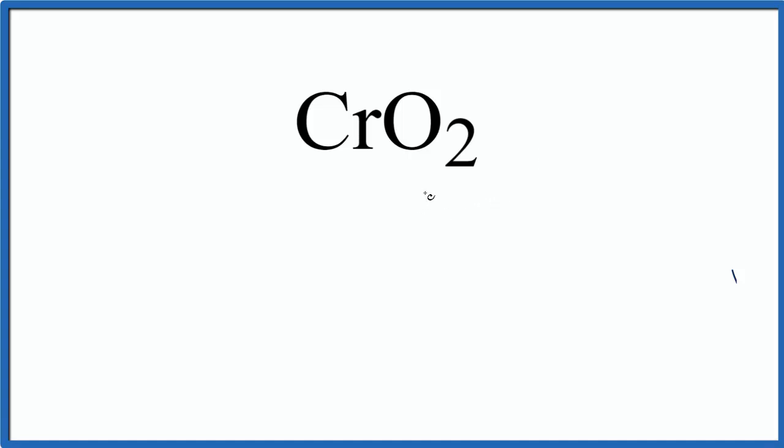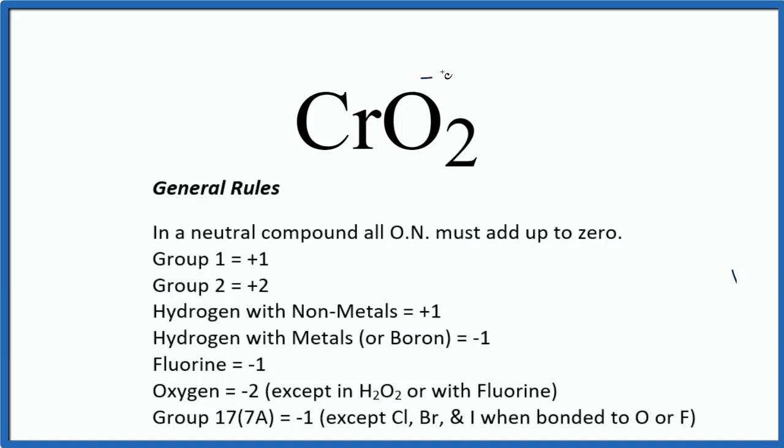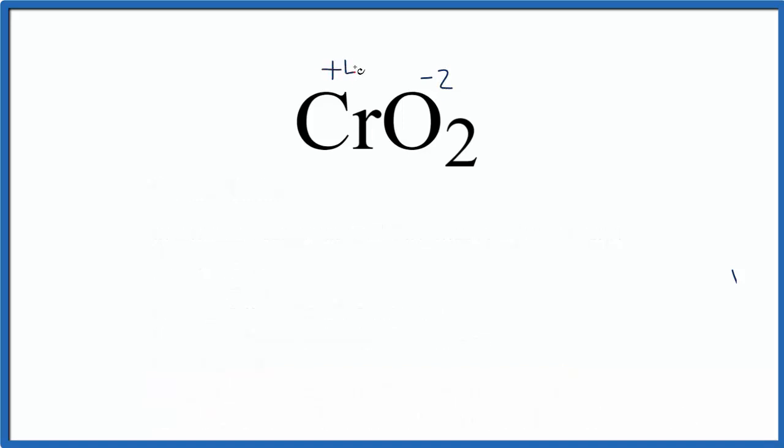We also know that oxygen normally has a minus two as its oxidation number. So we can see that two times minus two, that's going to be a minus four, and that would mean the chromium needs to be a plus four for those to add up and give us a total of zero.